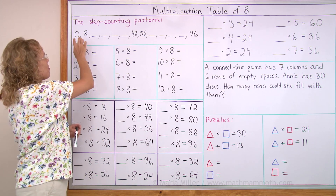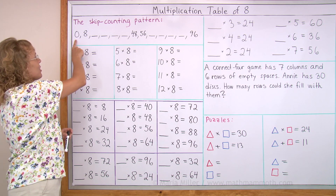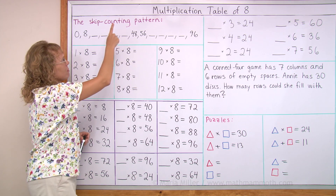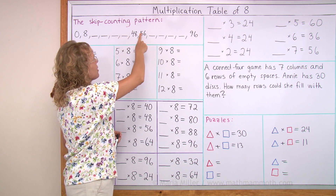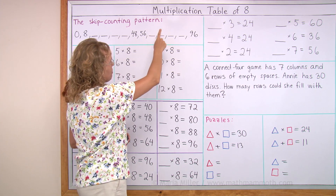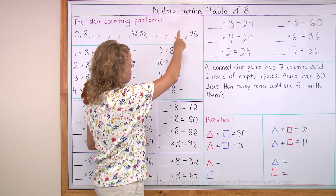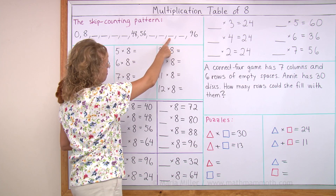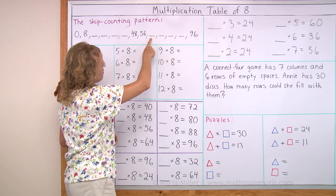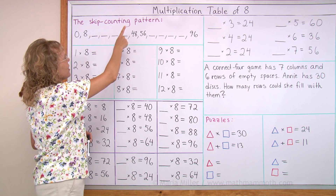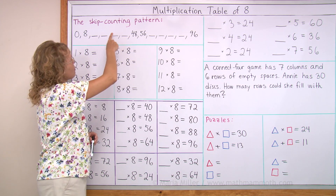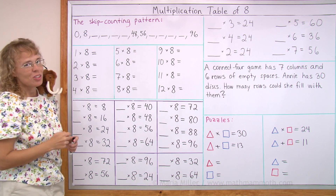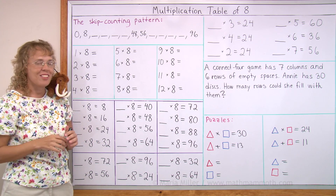And then one more time, from the beginning till the end and back. 0, 8 ... 48, 56 ... and 96. And then backwards: 96, 56 ... 48, 8, and 0. All right. Now go over that until you master it. And then you're ready to go on.